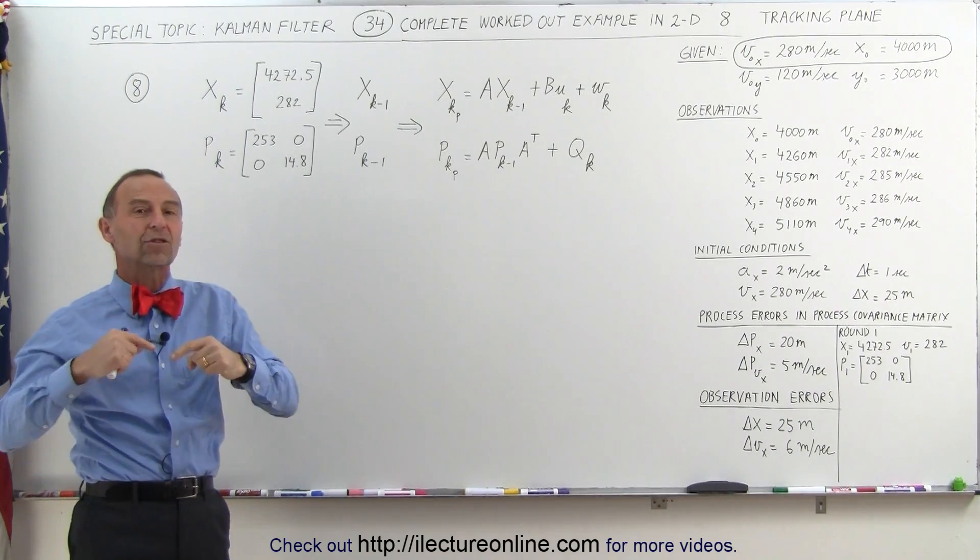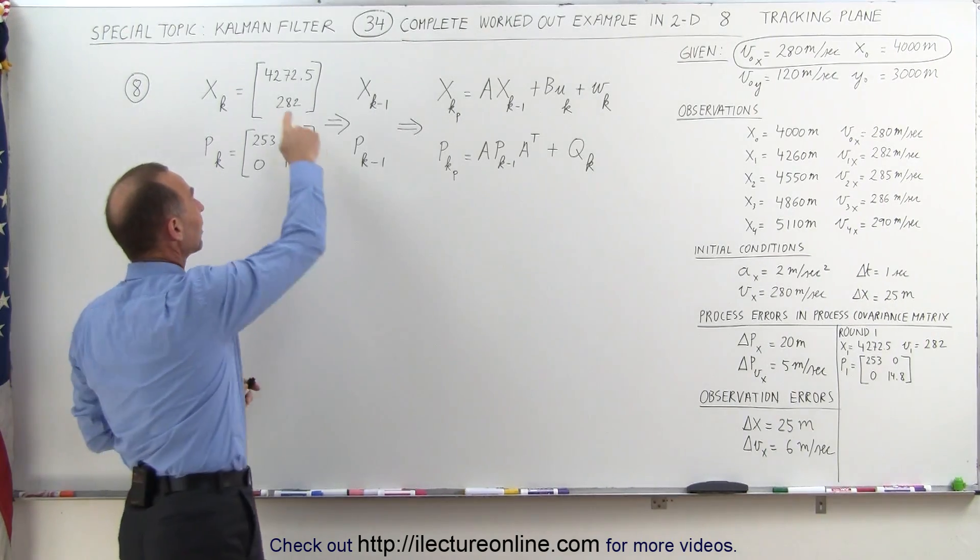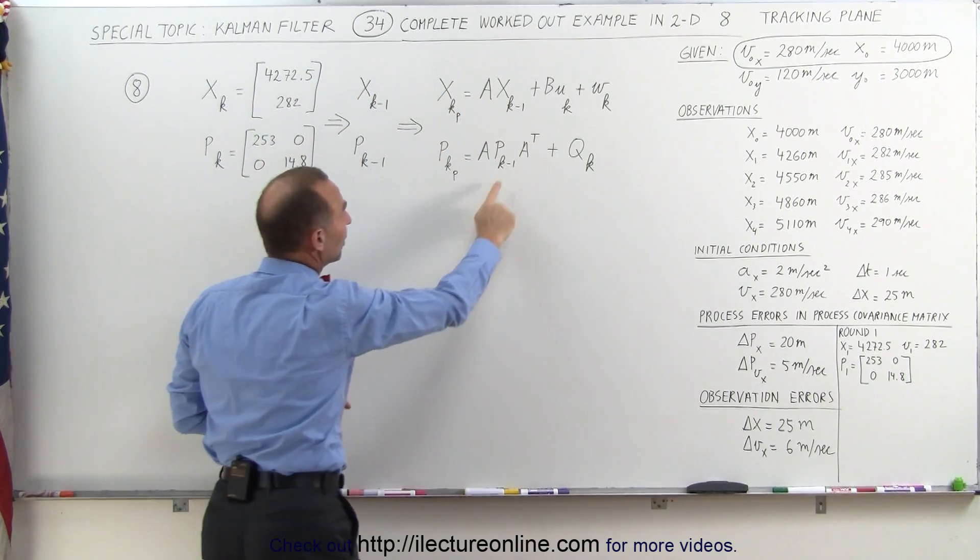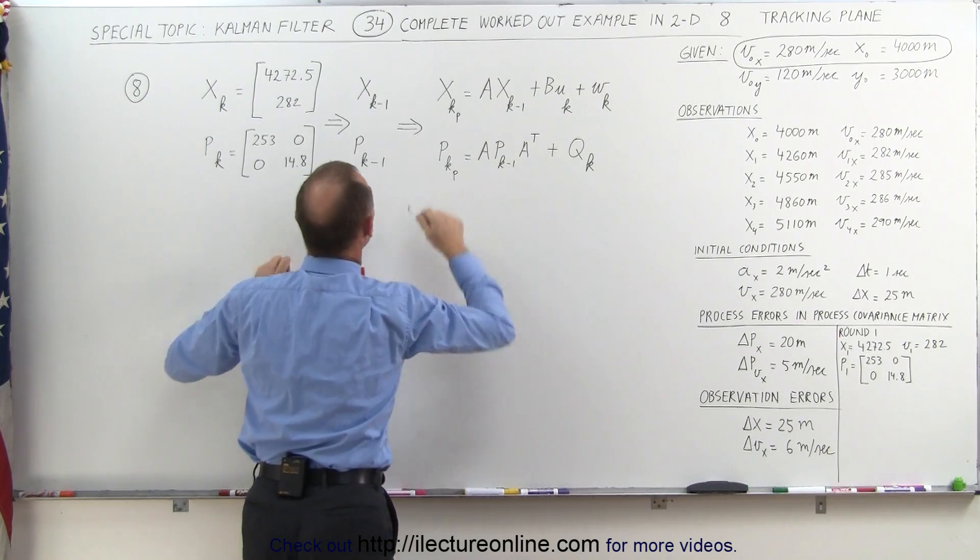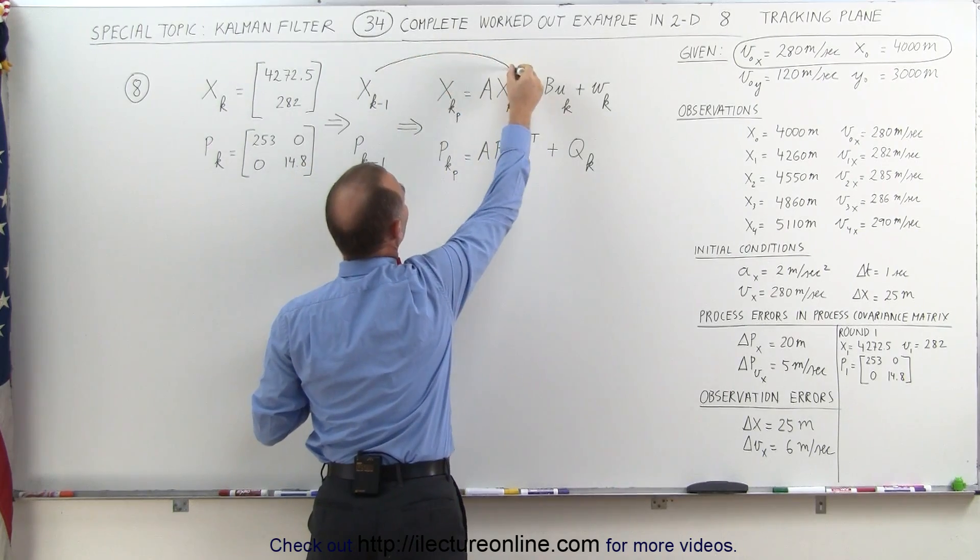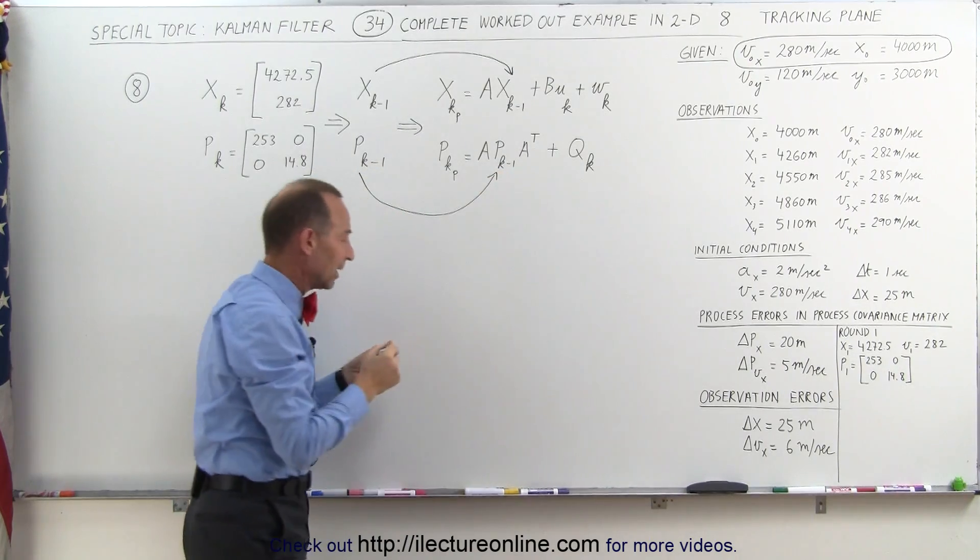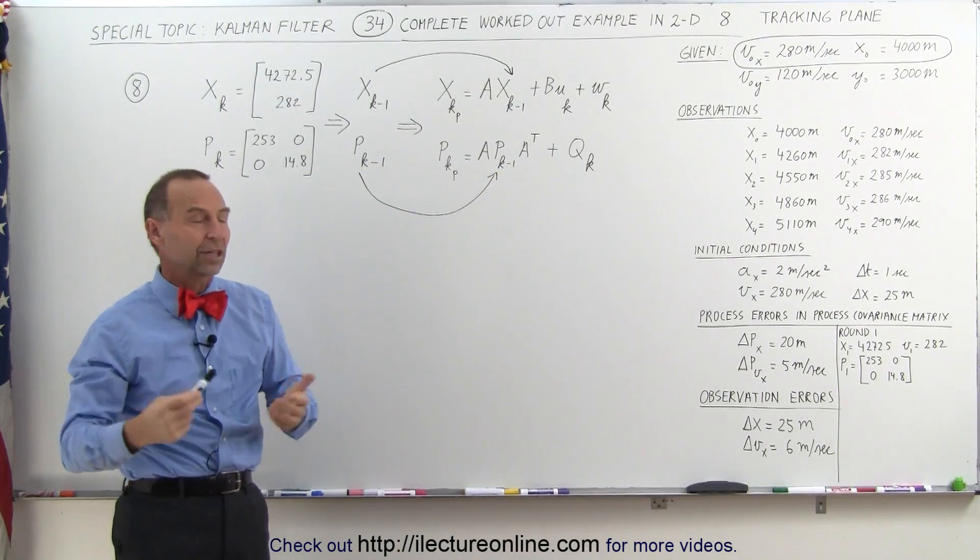We're going to use those now to start round two, so the one that's current becomes the previous value for the new round. In other words, this is now going to be replacing this value right in there, and this is going to be replacing that matrix right in there. So that's how we then start the second round.